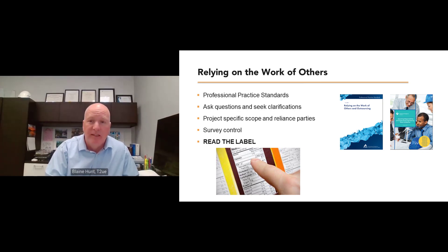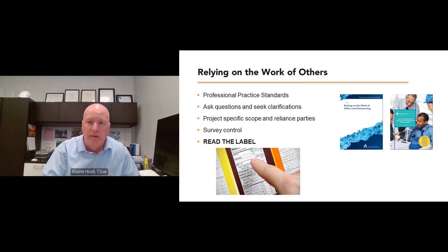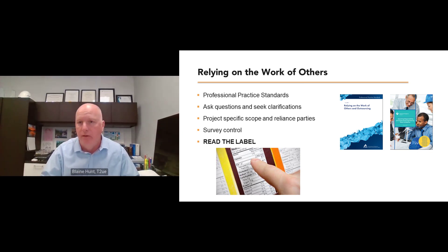Engineering reports are project-specific and include a group of parties that can rely upon the data. One of the big issues we stumble upon is survey control — I can't stress enough how important this is when using SUE data. It's geo-referenced, and understanding what control system it's in versus your project is very important. The original benchmarks, elevations, horizontal control monuments, and coordinate systems need to be understood. Many claims during construction result from misinterpretation due to survey coordinate system errors.